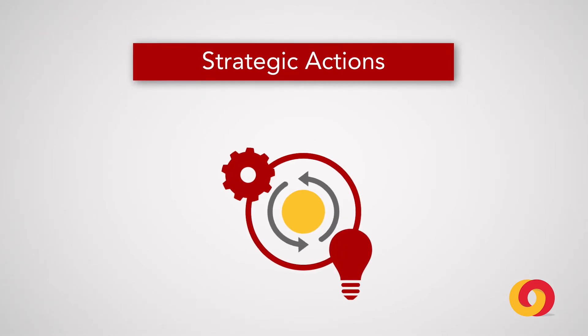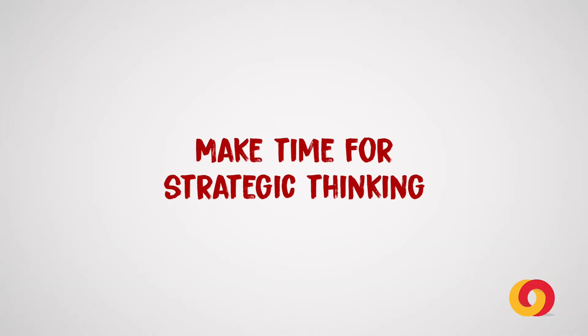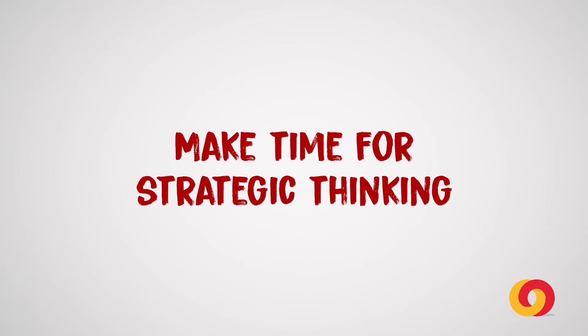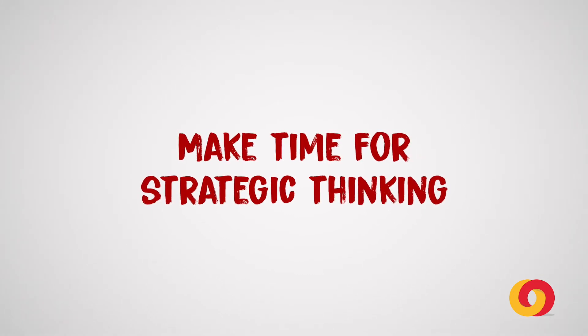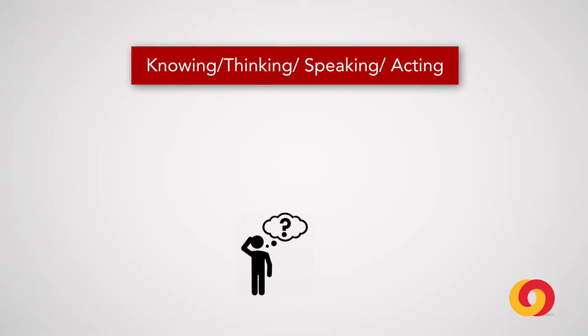The Harvard Business Review puts this in a very nice way. It says: make time for strategic thinking and embrace conflict so that you can act appropriately. What it's speaking to is always confronting your organization and being prepared to confront it with the realities, challenging conventional thinking, and being willing to embrace friction to arrive at strong strategic action. The Harvard Business Review calls this framework: knowing, thinking, speaking, acting.